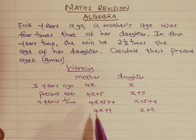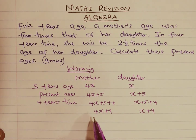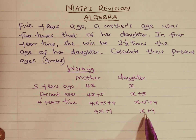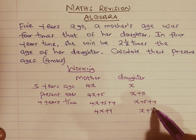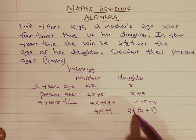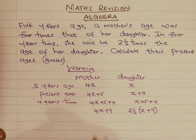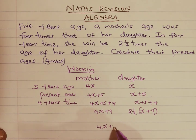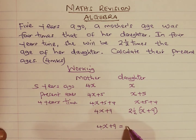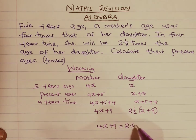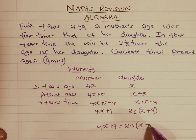We are told that in four years' time, the age of the mother will be two and a half times the age of the daughter. So we need to multiply the age of the daughter by two and a half. We can say the age of the mother, which is 4X plus nine, will be equal to two point five times X plus nine.